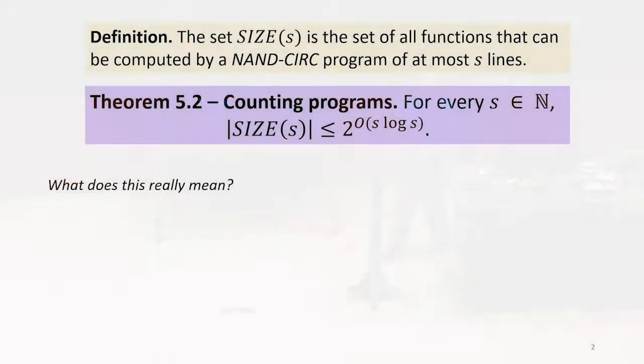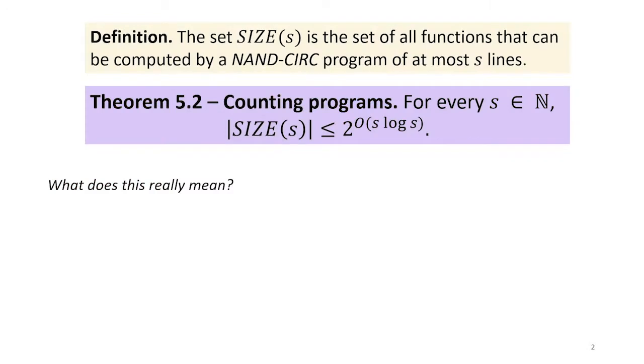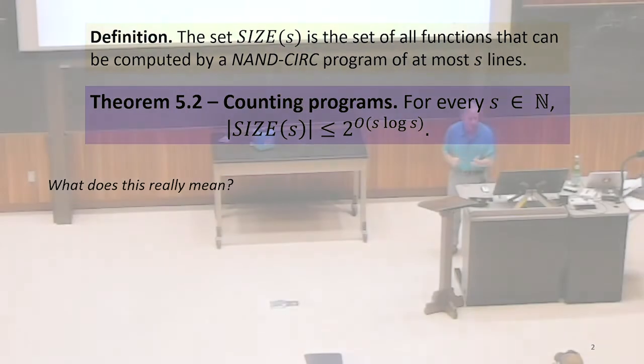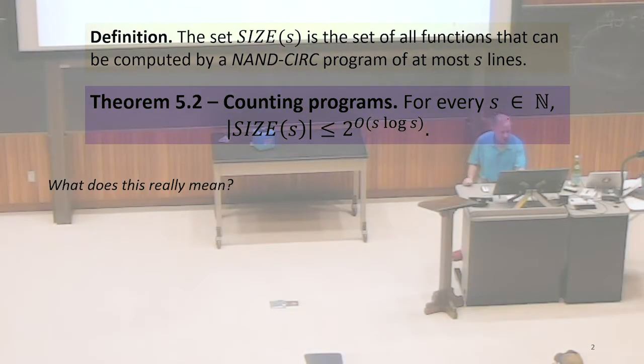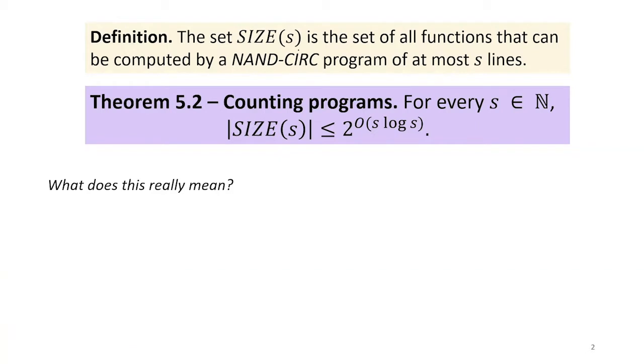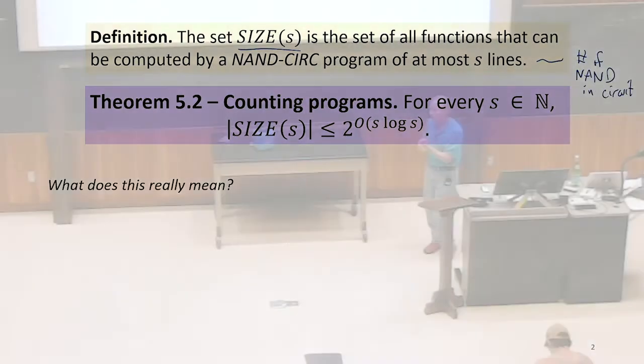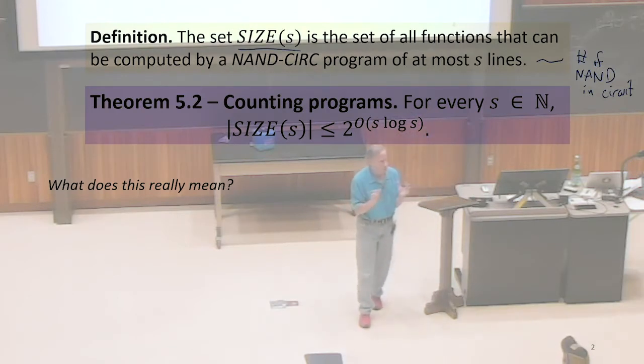So this is the theorem, slightly reworded, what's Theorem 5.2 in the book, which is actually kind of strange the way it's written. So it's a theorem that says for every natural number s, we define SIZE(s) as the set of all functions that can be computed with a NAND-CIRC program of at most s lines. So this is kind of analogous to counting the number of NAND gates, but it's not exactly the same as that. It's very precisely defined here that we're counting lines in a NAND-CIRC program.